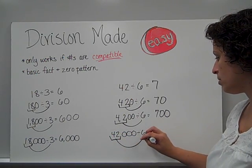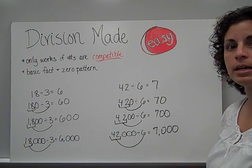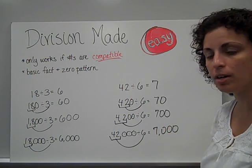42,000. 42 divided by 6 is 7. 1, 2, 3 zeros. So 1, 2, 3 in my answer as well. So there's the pattern.